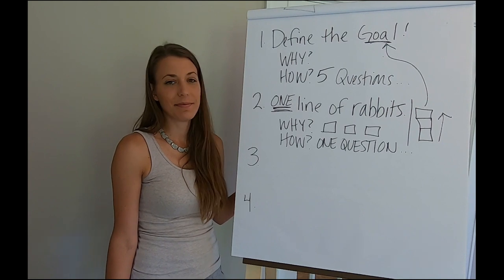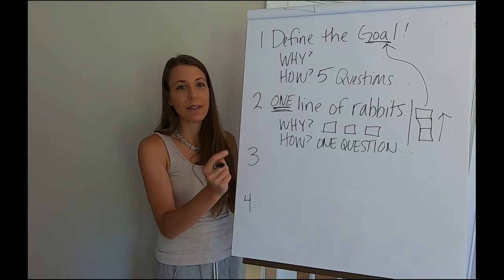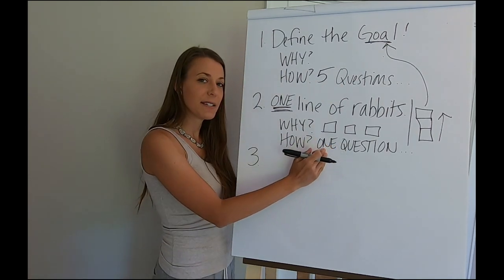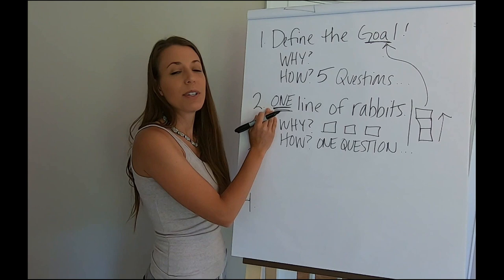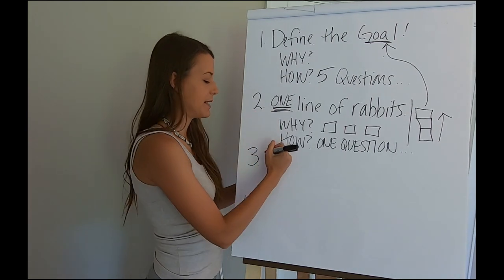Number three, you want to actually write the goal down. You wrote down the answers to the five questions, you wrote down the answer to this one question, you focused down to one line of rabbits. So write it down.